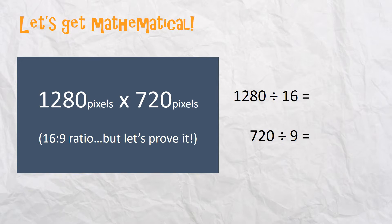Well, we prove it by taking 1280, and we're going to divide it by 16, and we find out that 16 will go into it 80 times. By the same token, if we take 720 and divide it by its height, that 9 height, we get, you got it, 80.